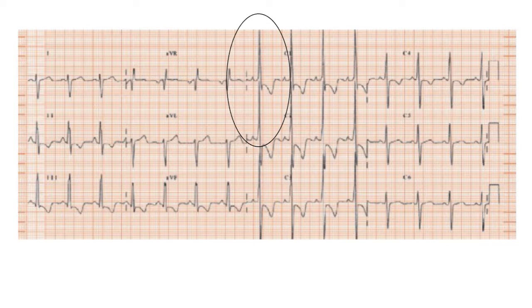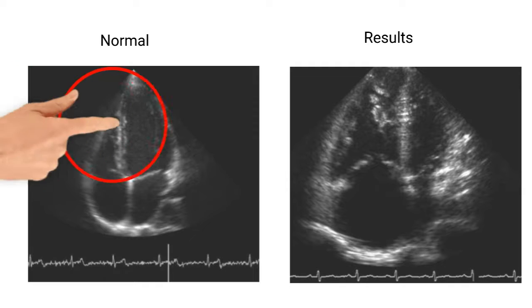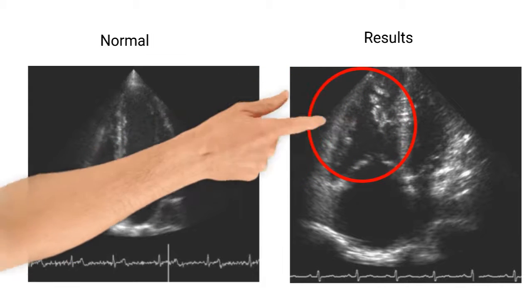Since the results are not very specific, Dr. House decides an echocardiogram needs to be performed next. An echocardiogram uses ultrasound technology to produce a visual of the blood flow between the heart chambers and valves. The results of Sarah's echocardiogram show right ventricular dilation and hypertrophy.